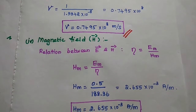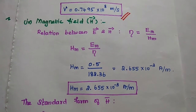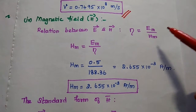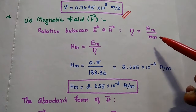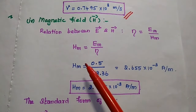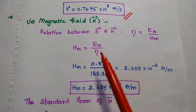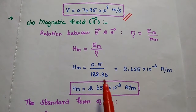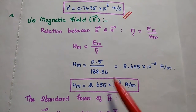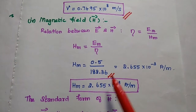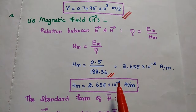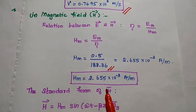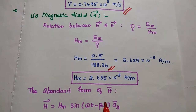The last quantity is the magnetic field. Using the relation eta = E/H, we get Hm = Em / eta. Substituting Em = 0.5 and eta = 188.36, the magnitude of the magnetic field is 2.655 × 10⁻³ amperes per meter.